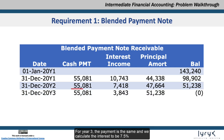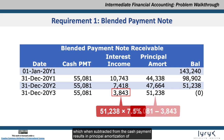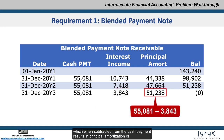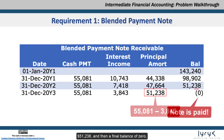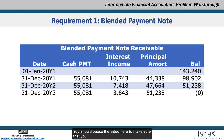For Year 3, the payment is the same and we calculate the interest to be 7.5% times the Year 2 ending balance of $51,238, resulting in interest income of $3,843, which when subtracted from the cash payment results in principal amortization of $51,238, and then a final balance of 0 — which is exactly what we want, since the note should be paid off after the third payment. You should pause the video here to make sure that you can confirm all of the values in the amortization table.